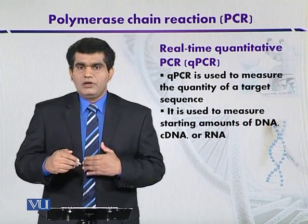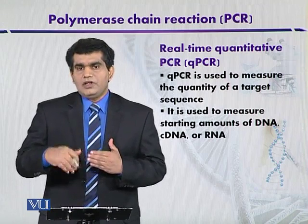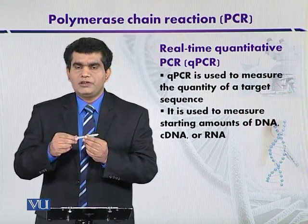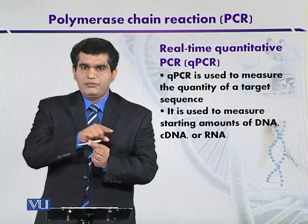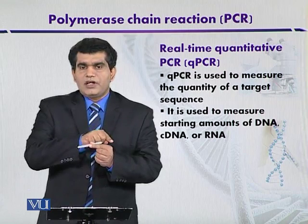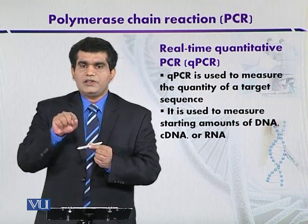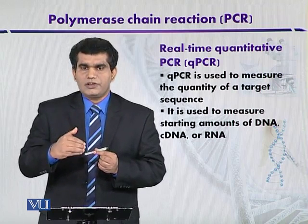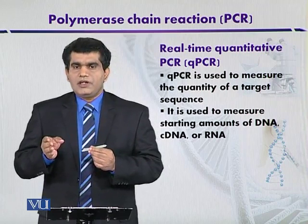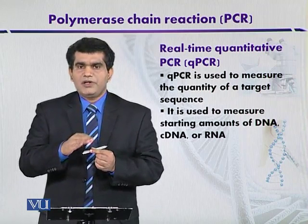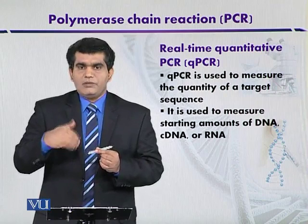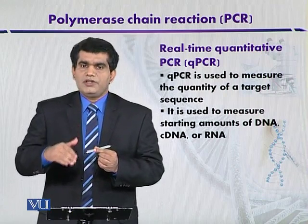The mechanism to generate fluorescence as new DNA fragments are generated during the PCR reaction is as follows: the probe binds downstream of one of the primers. When Taq polymerase starts its amplification, the fluorescent dye is cleaved by the 5'-to-3' exonuclease activity of Taq DNA polymerase. As soon as it is cleaved, fluorescence is recorded. The probe is removed, and now the quencher is no longer in close proximity with the fluorescent dye, so fluorescence is recorded after each PCR cycle.